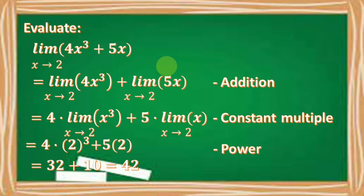So the first theorem that we're going to use is the addition theorem. We're going to add the limit of 4x cubed as x approaches 2 to the limit of 5x as x approaches 2.